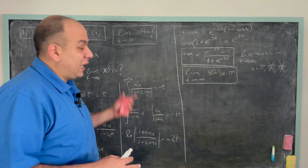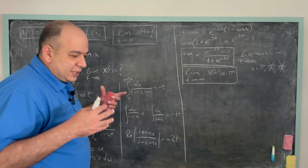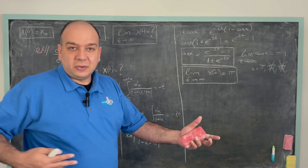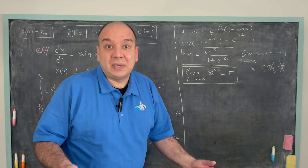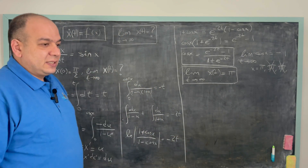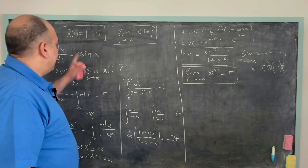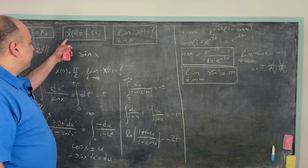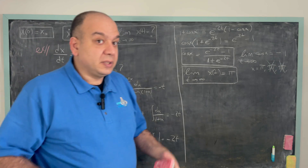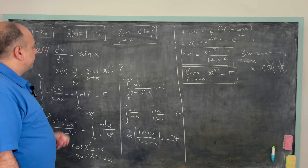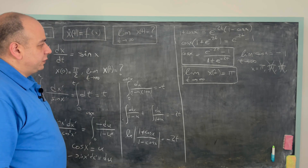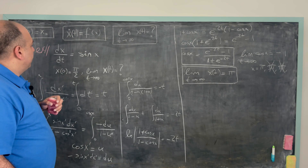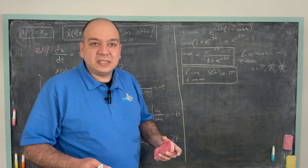Now let's look at this problem in a different way. Suppose x is a coordinate and there is a fluid moving on the x-axis, with t as time. Then x-dot gives a velocity vector at any location — this defines a one-dimensional vector field. At any given point x, knowing x-dot tells us how the fluid moves.